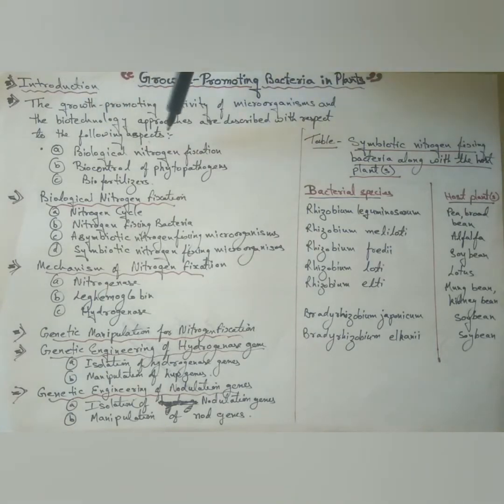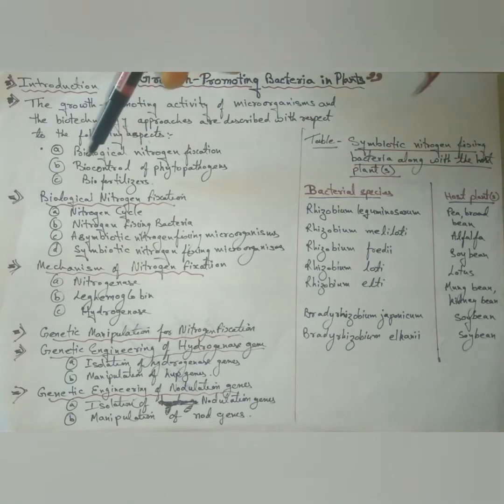The former is the direct effect while the latter is the indirect effect of growth-promoting bacteria in plants. The growth-promoting activity of microorganisms and the biotechnology approaches are described with respect to the following aspects. First biological nitrogen fixation, second biocontrol of phytopathogens and third biofertilizers. In this part 1, we will discuss only biological nitrogen fixation.